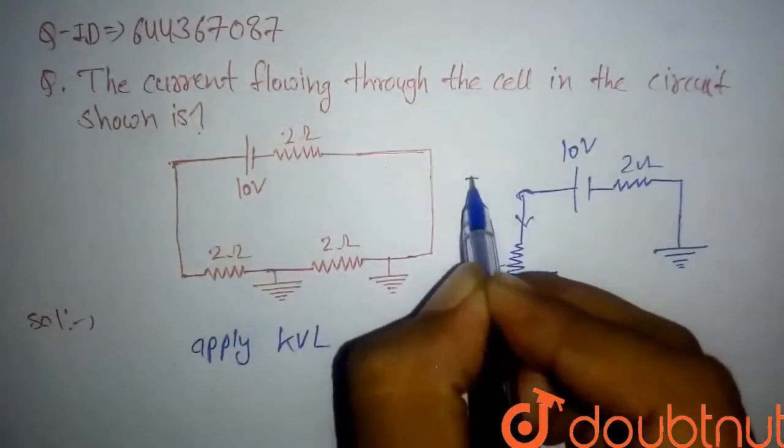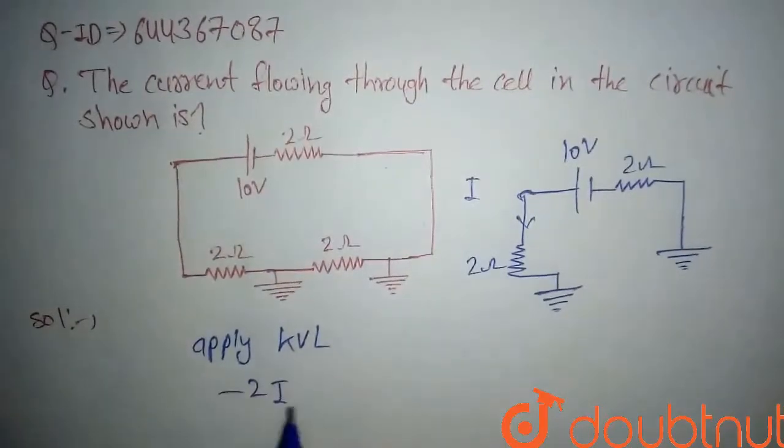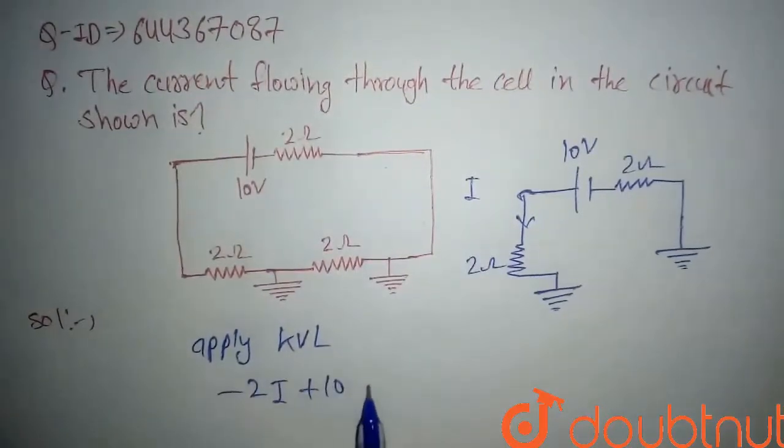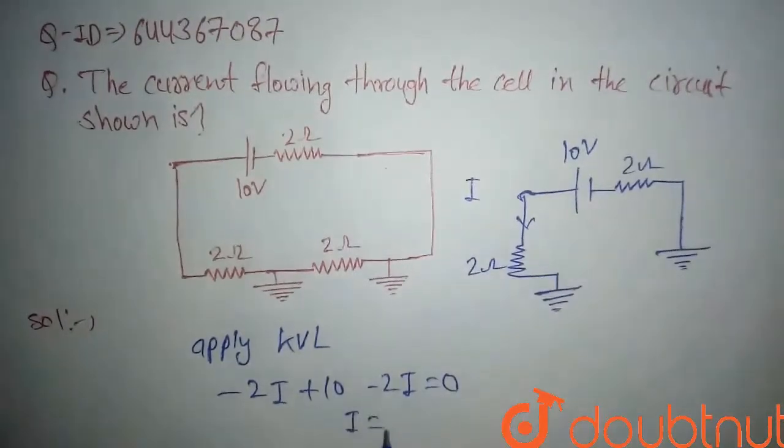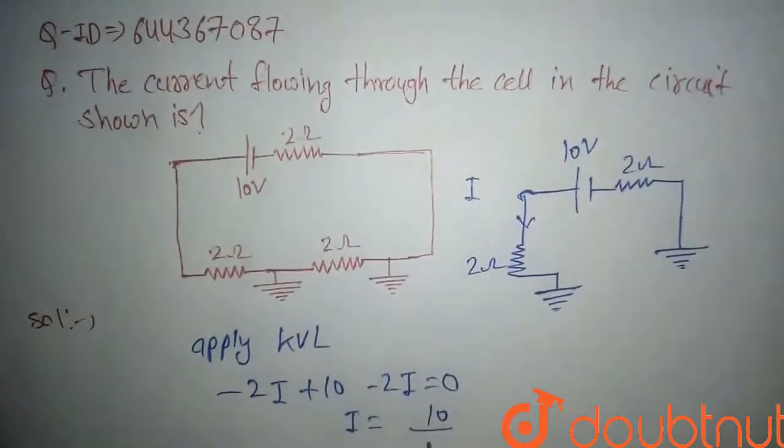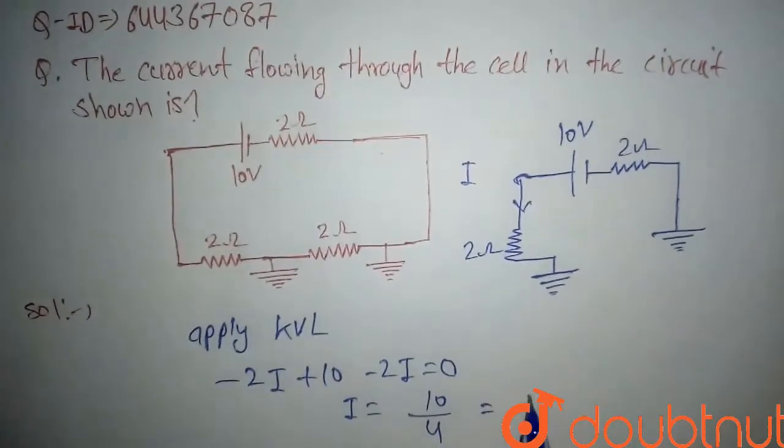So minus 2I plus 10 volts minus 2 times I equals 0. Just apply KVL here. So we will get I equals 10 by 4, I equals 10 by 4, which is equal to 5 by 2.